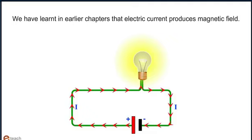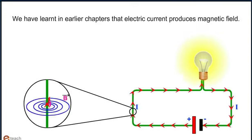We have learned in earlier chapters that electric current produces magnetic field. As shown, a current carrying wire produces magnetic field which are circular in shape.